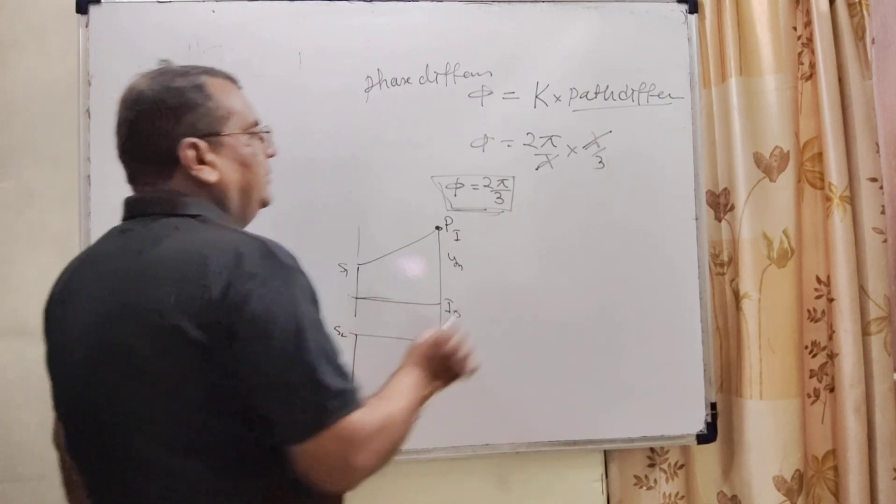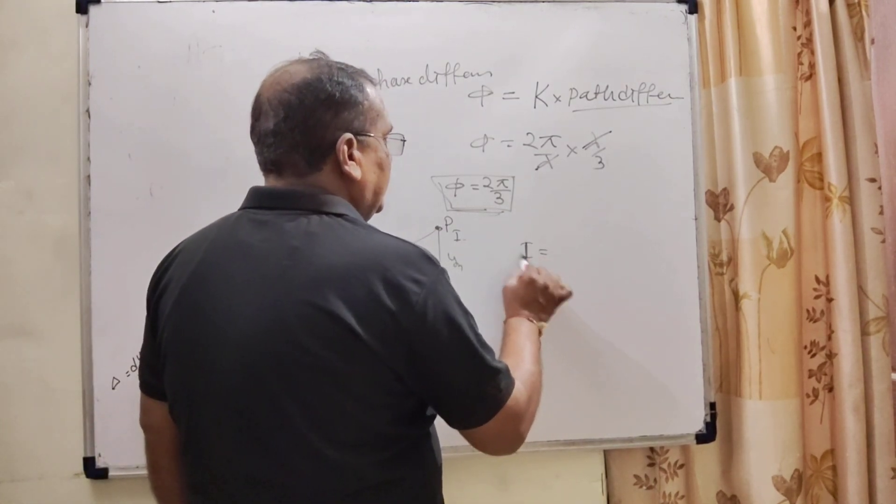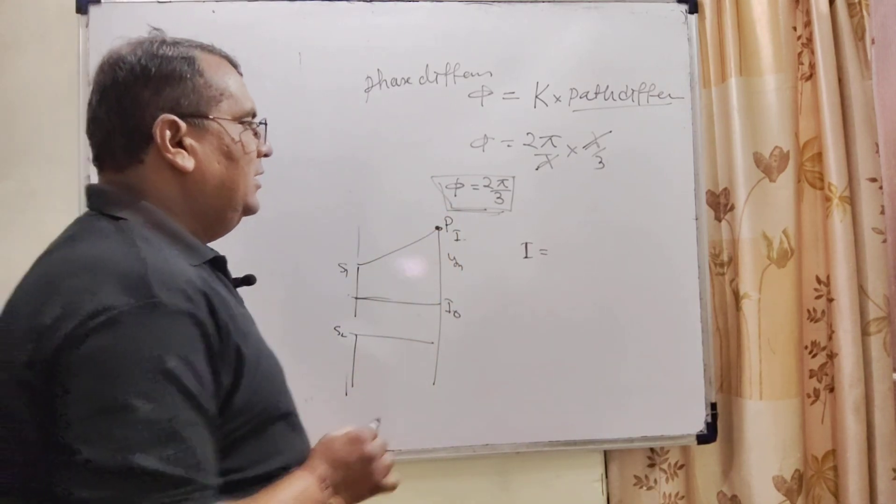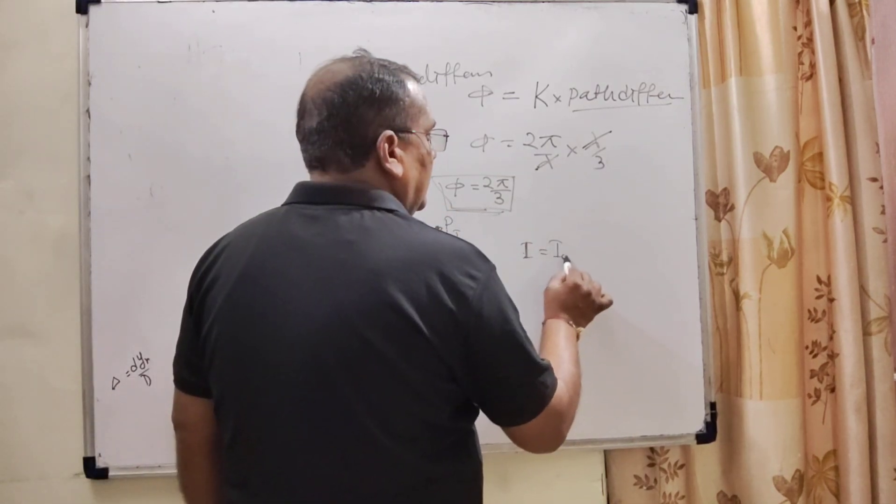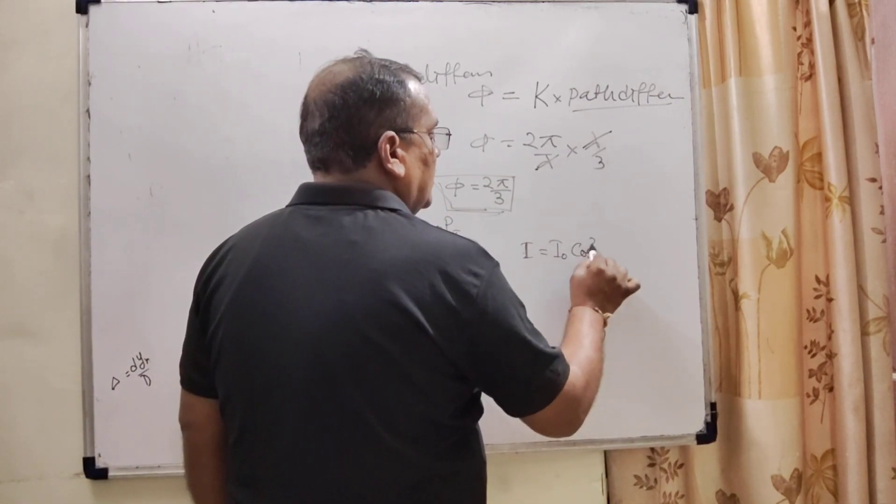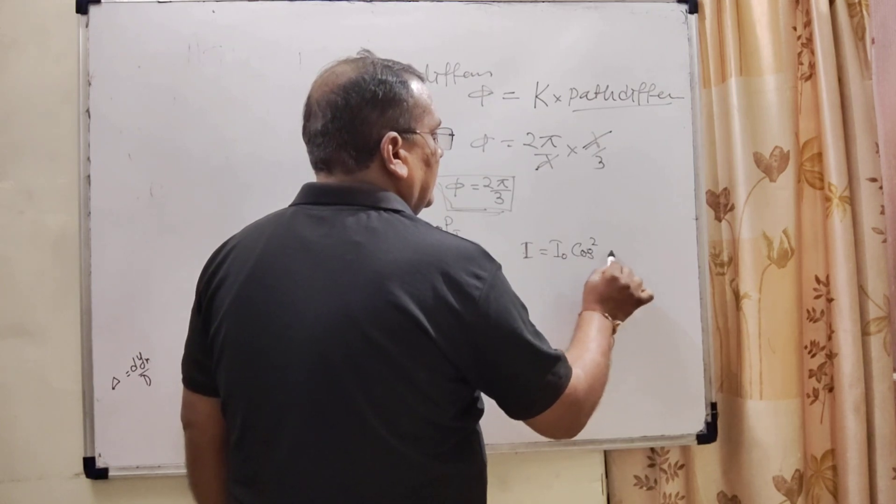So here the relation between the intensity at the point P is I equal to I0 cos square phi.